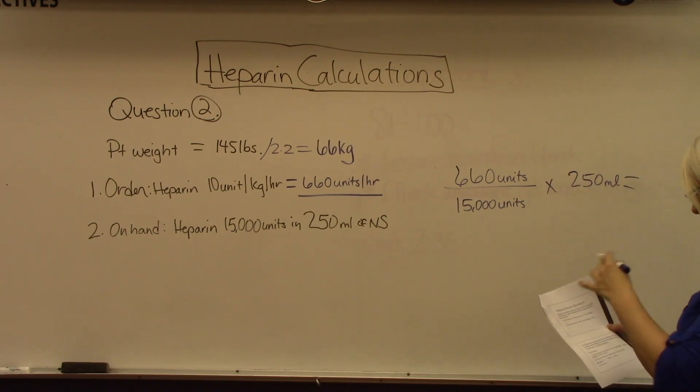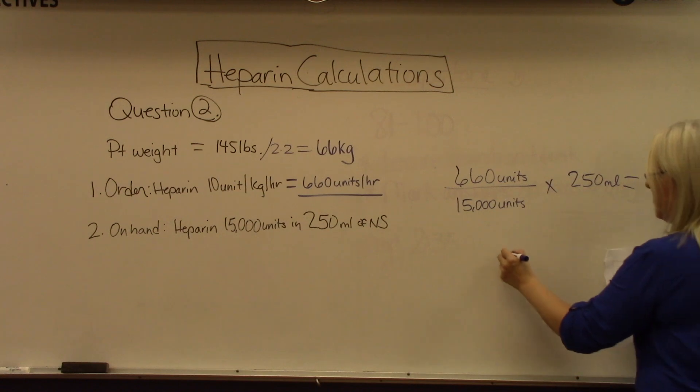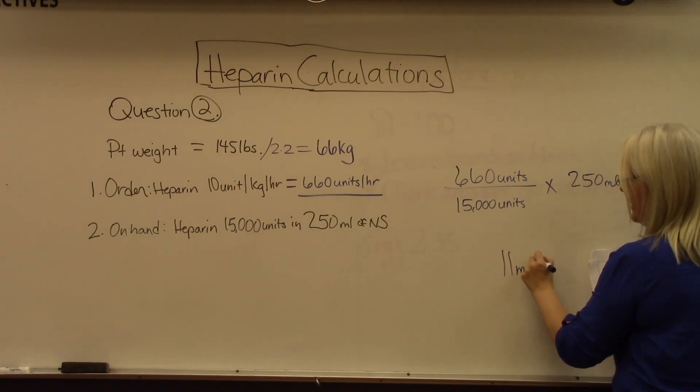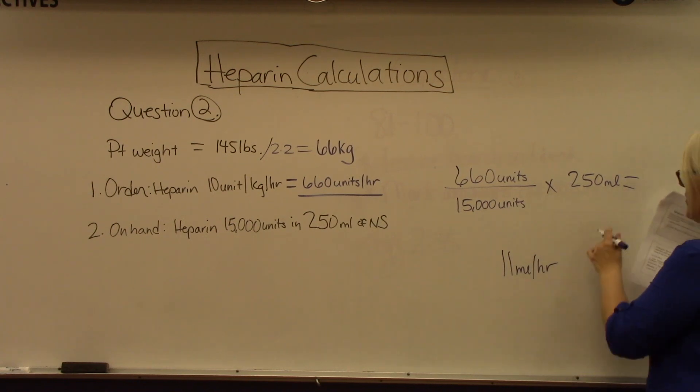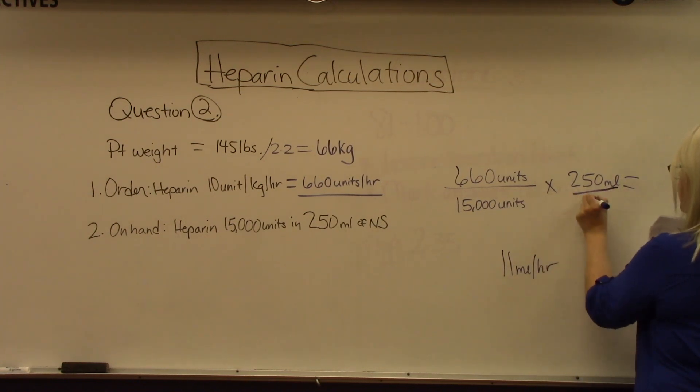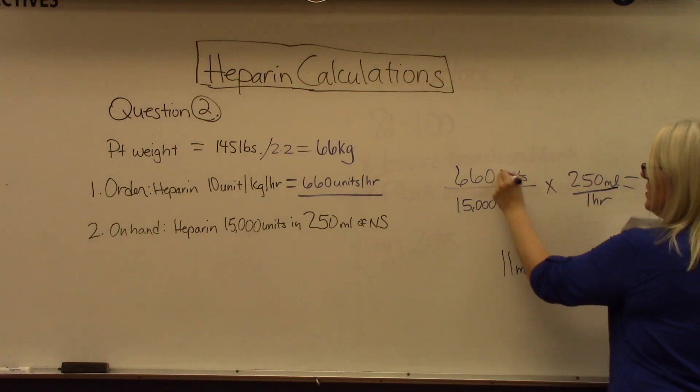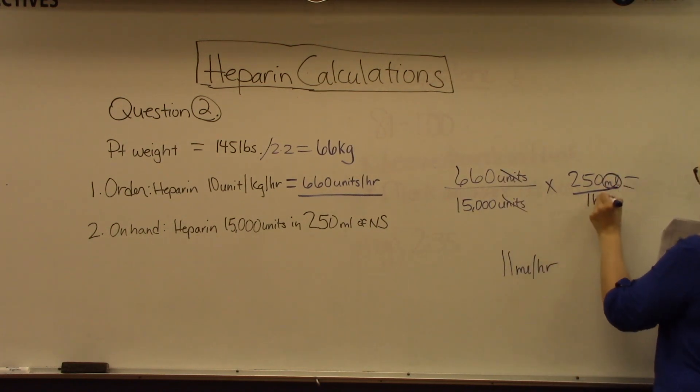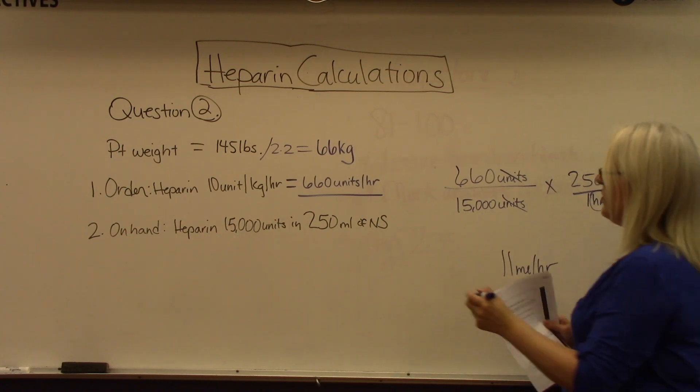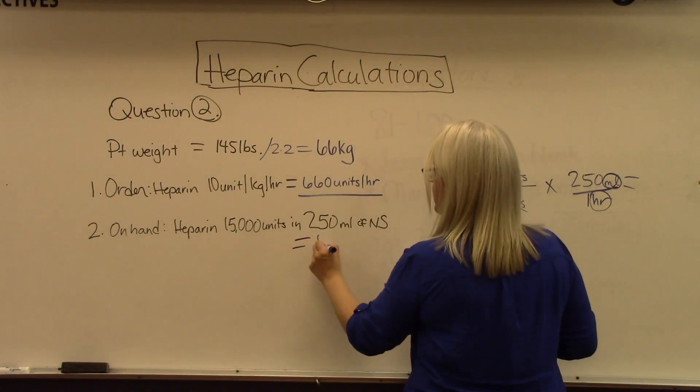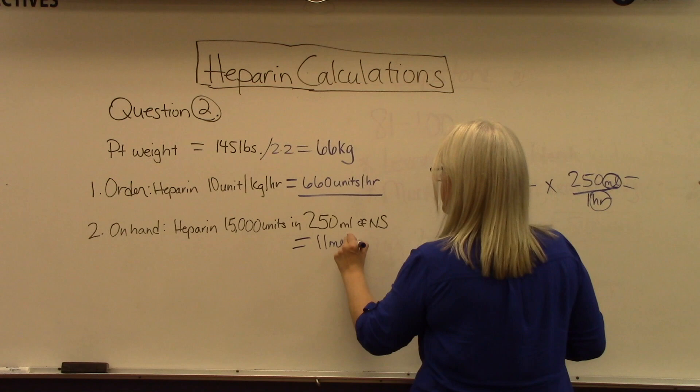What do we have available? We have heparin 1,500 units in a volume of 250 milliliters. When we do our calculations, it works out to 11 milliliters per hour. This works because units cross each other out, leaving milliliters per hour.